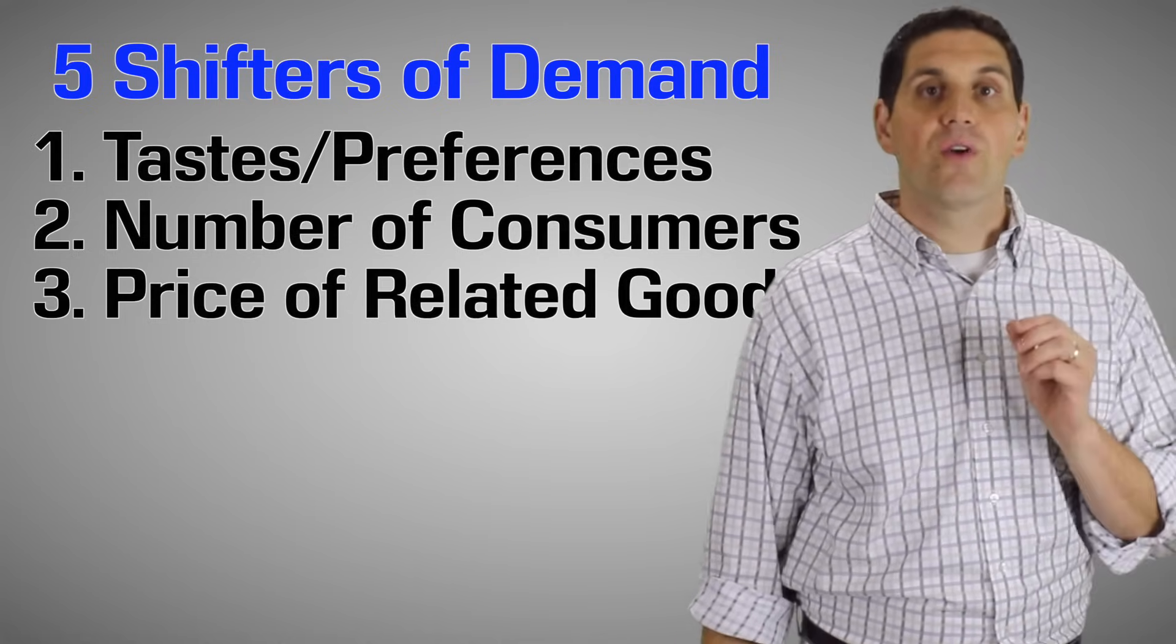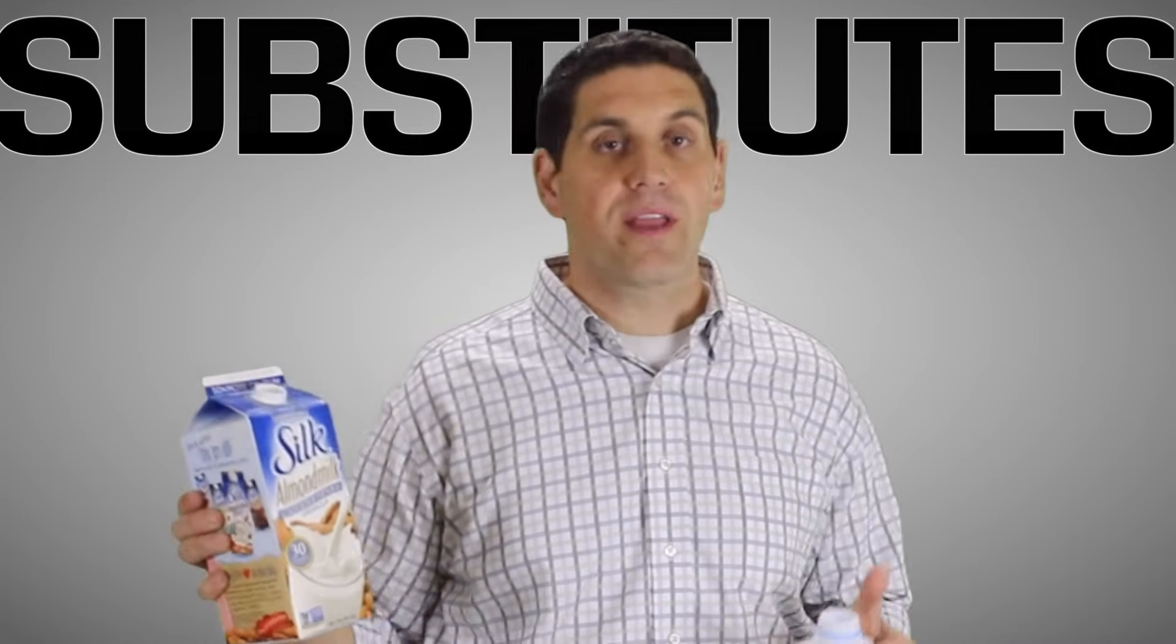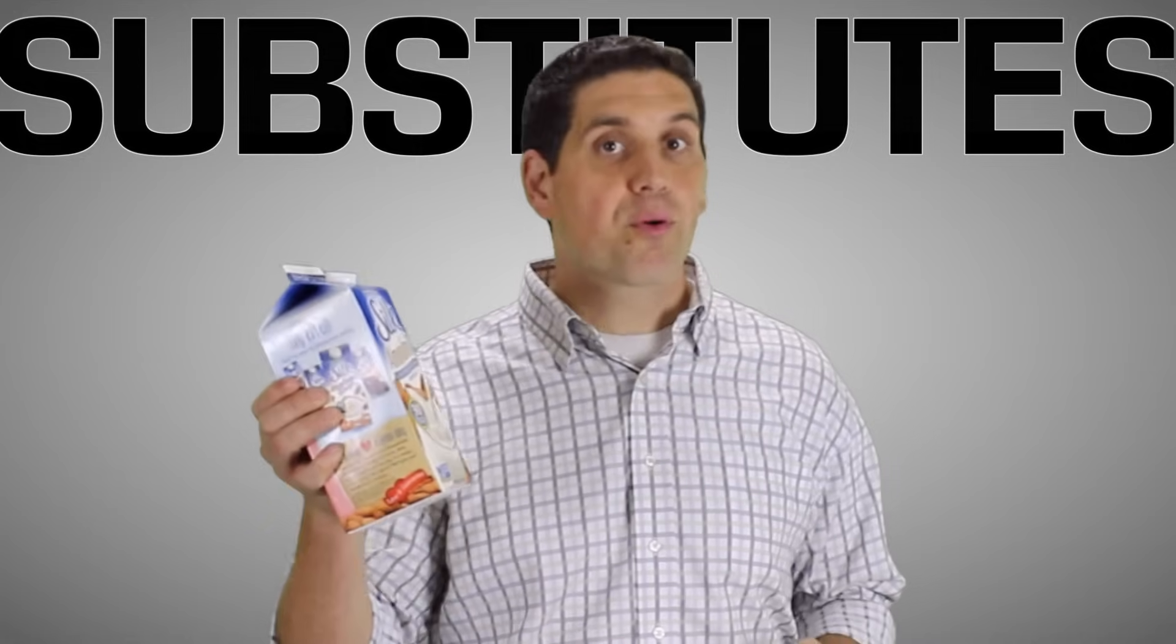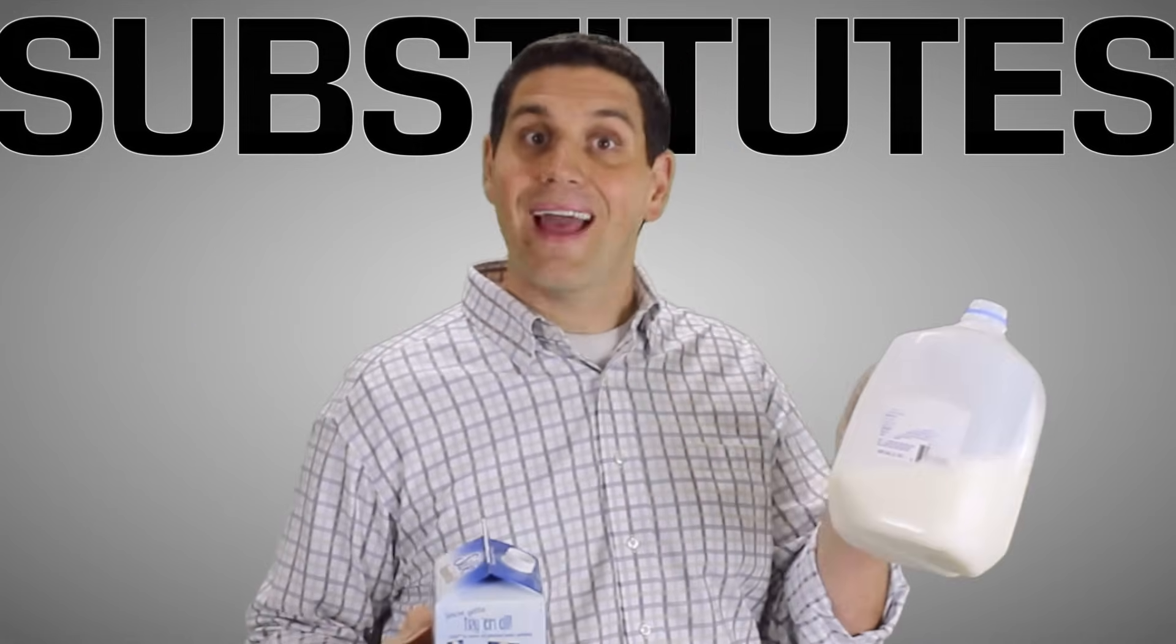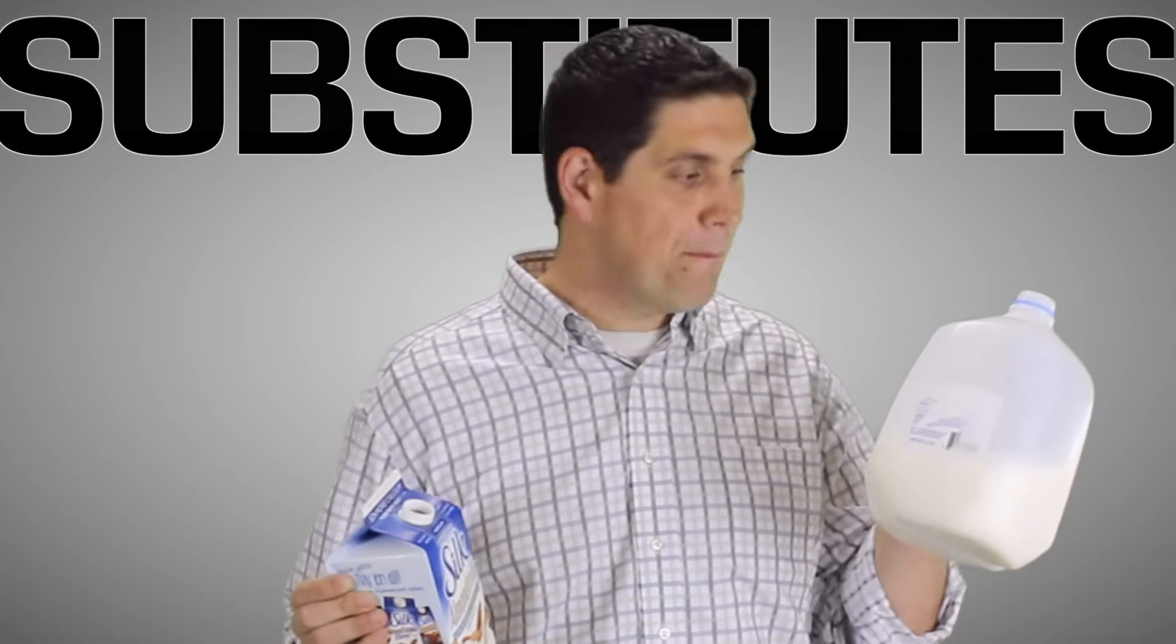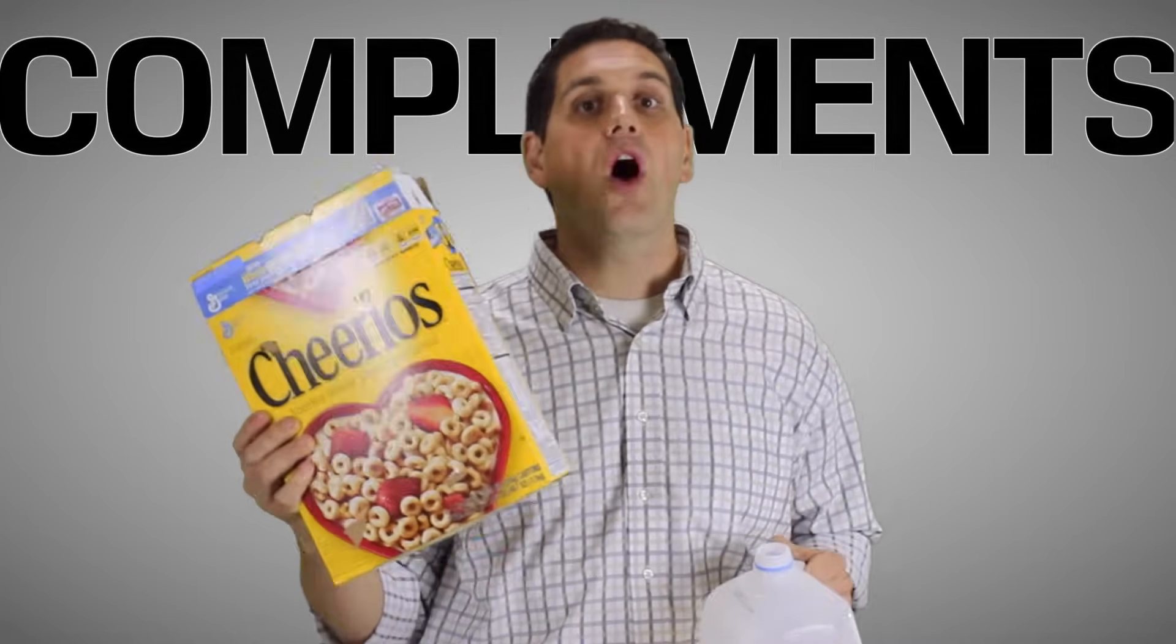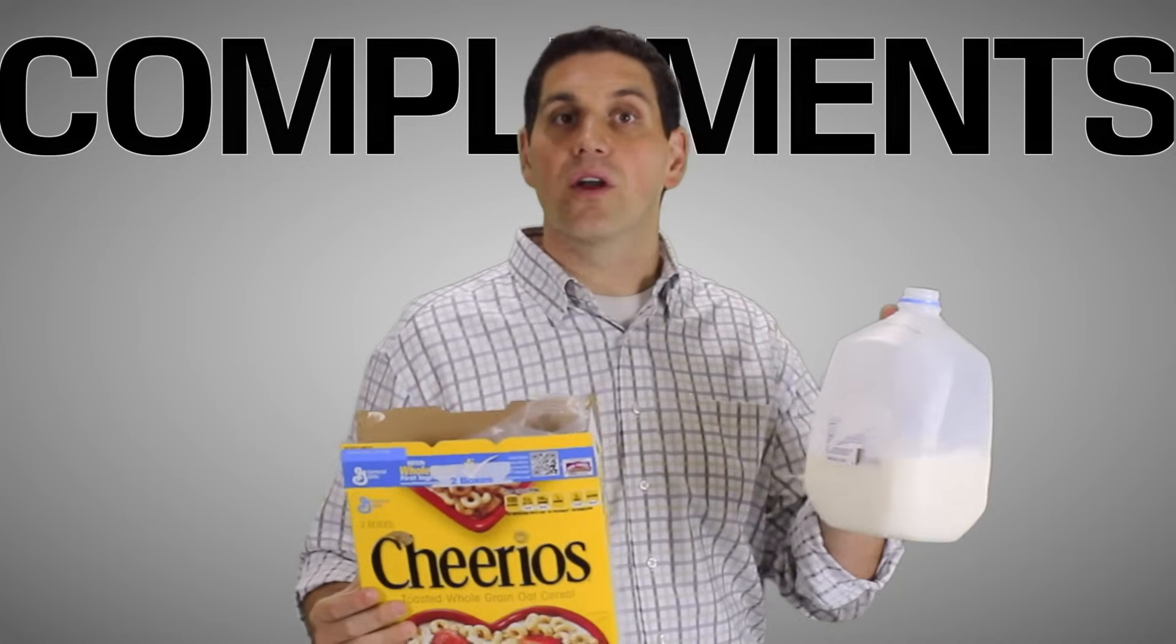Another shifter is the price of related goods, substitutes and complements. For example, almond milk and cow's milk are substitutes for each other. That's a bad idea. So if the price goes up for almond milk and it's more expensive to buy this, then the demand is going to increase for cow's milk. If the price goes down for almond milk, that means people are going to move away from buying cow's milk, buy more almond milk, so the demand for cow's milk will fall. And of course there's also complements. So when the price of cereal falls, that's going to increase the demand for milk.